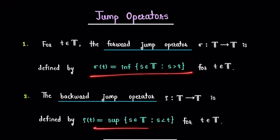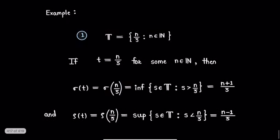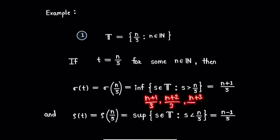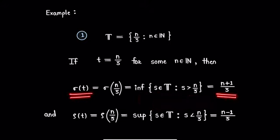Now we will see these two concepts using examples. The first example is of a time scale containing numbers of the form n/3 where n is some natural number. If we consider t = n/3 for some fixed natural number n, then sigma(t) = sigma(n/3) is the infimum of the set of all elements s in time scale T such that s is strictly greater than n/3. This set contains numbers n+1/3, n+2/3, n+3/3, and so on, and clearly its infimum is (n+1)/3. So we get sigma(t) = (n+1)/3.